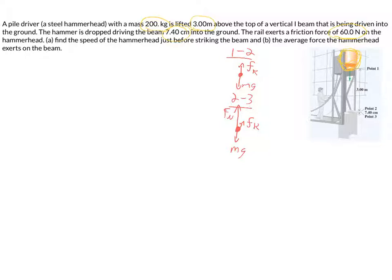We're asked to figure out two things. First, in Part A, we're asked to figure out what is the speed of the pile driver at point 2, so right before it impacts the beam. And then for Part B, we're asked to figure out what is the average force the hammerhead exerts on the beam, so we're trying to figure out what that normal force is. I want you to use conservation of energy to solve.